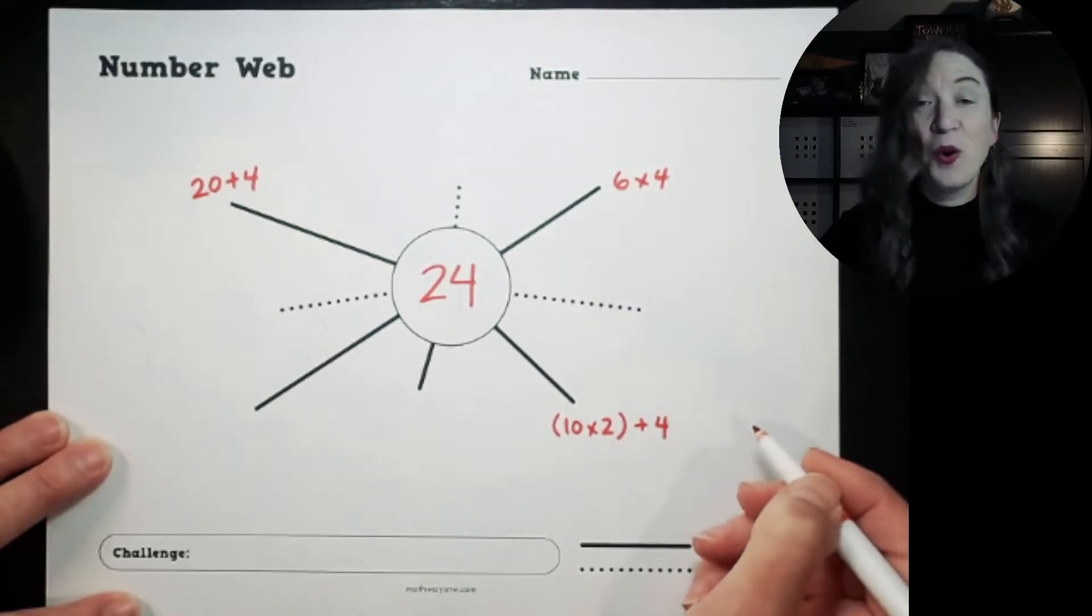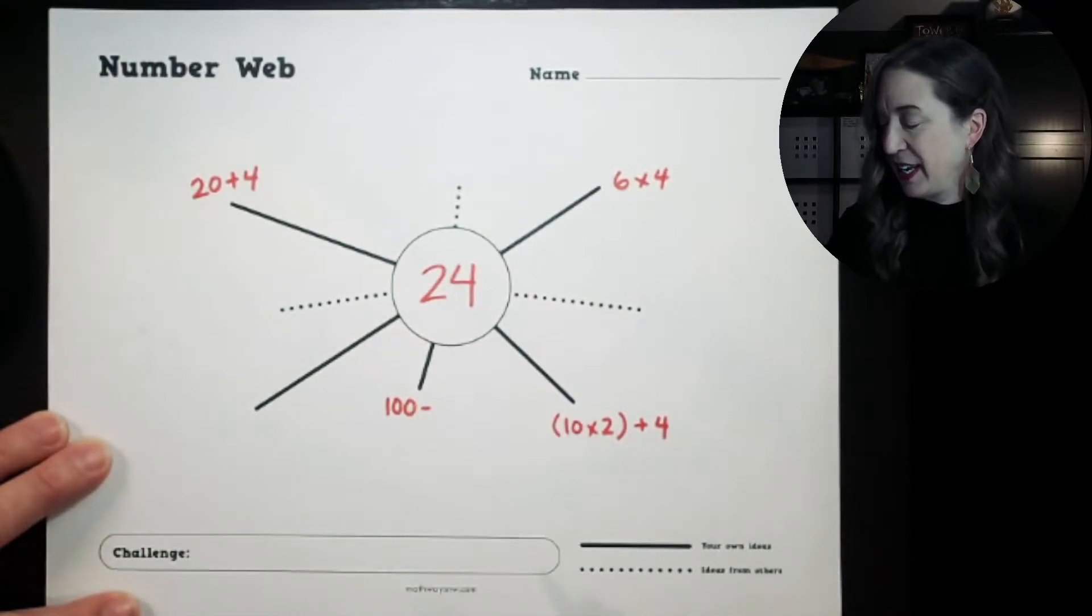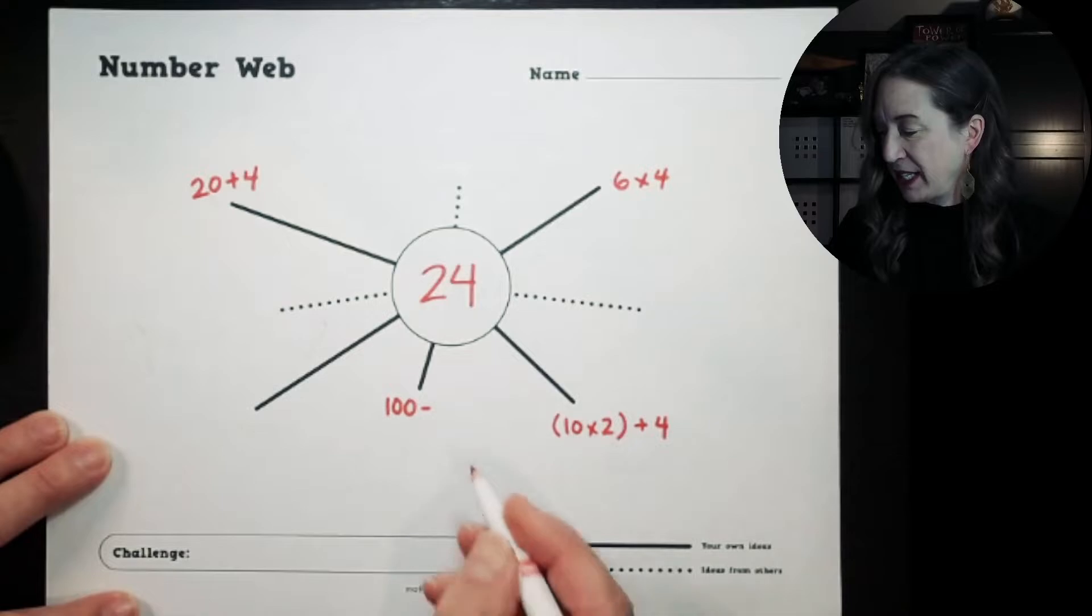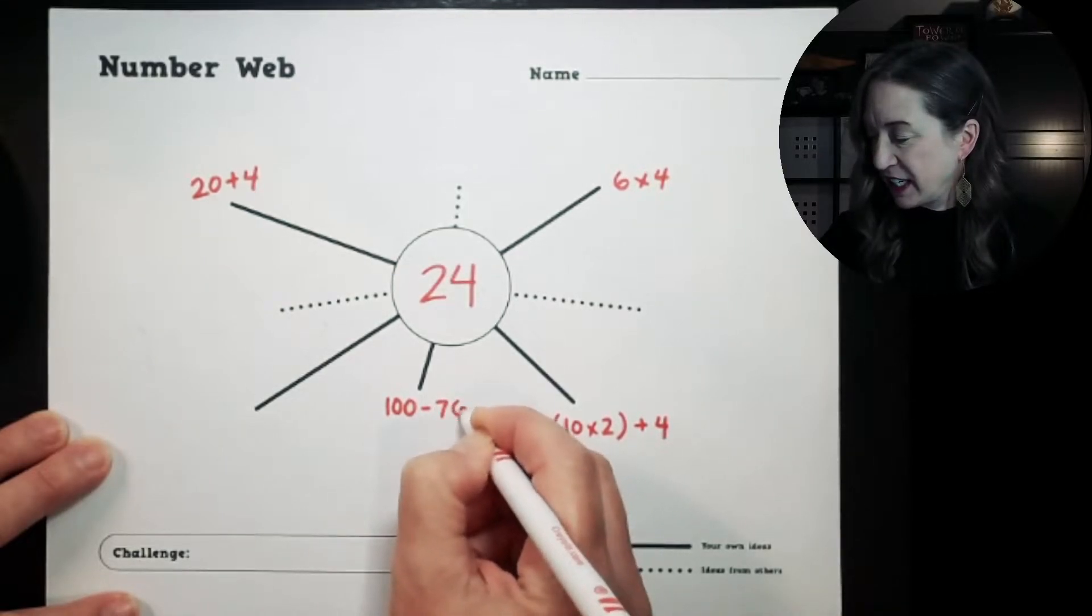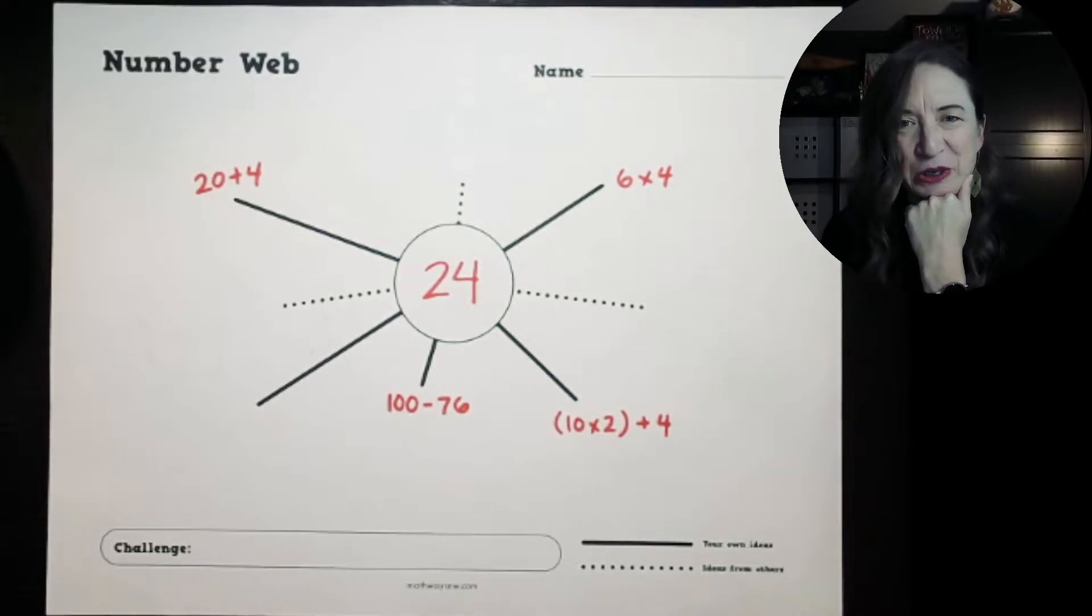What else can I do? Oh, I can do subtraction, so I'll start with 100 just for fun. Let's see, 100 minus 76 would be 24, and I need one more of my own.